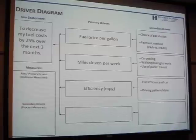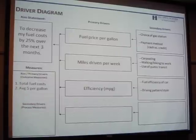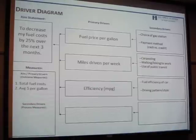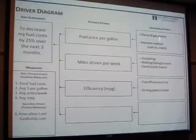Back to the driver diagram for reducing fuel costs by 25%. Outcome measures directly address your primary drivers and aim statement. One outcome measure could be total fuel cost - directly measuring the outcome in the aim statement. Another could be average price per gallon, which is one of the primary drivers. By measuring that every week or month, you'd be measuring a primary driver to figure out whether you're getting to your outcome goal. You can address each primary driver with a corresponding outcome measure.